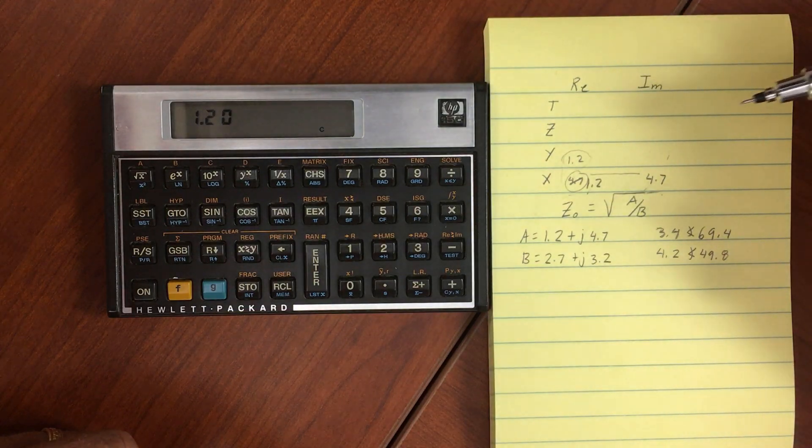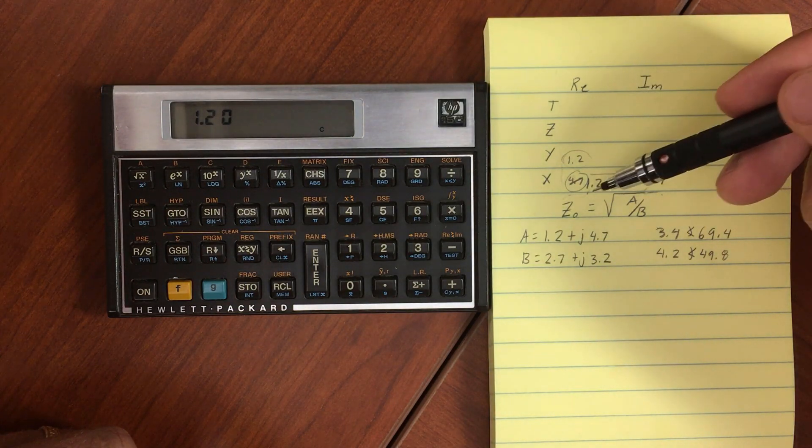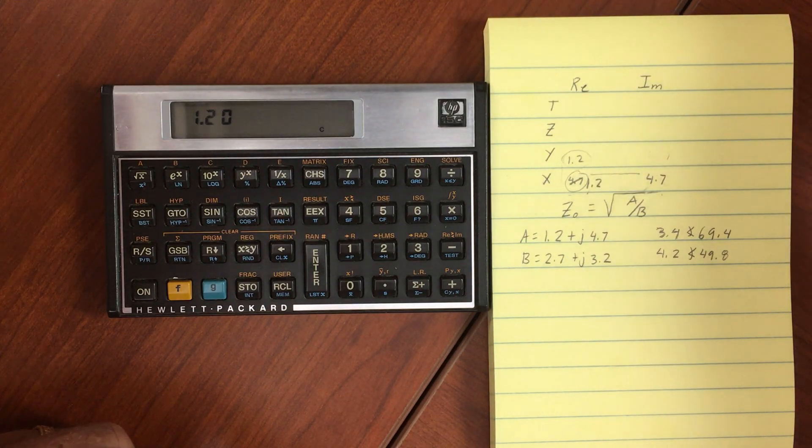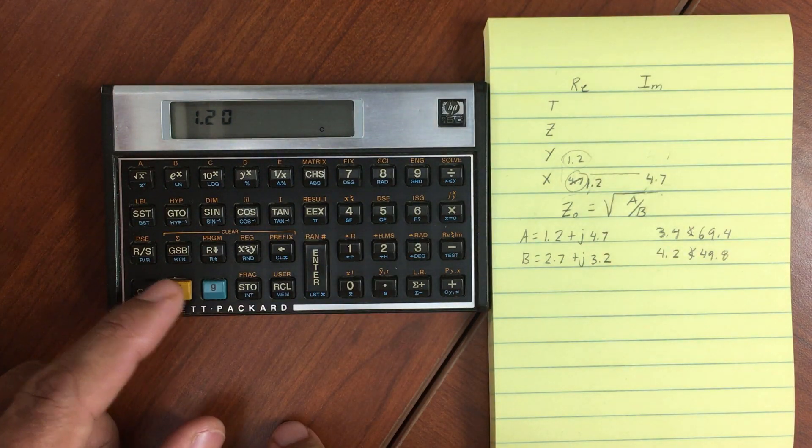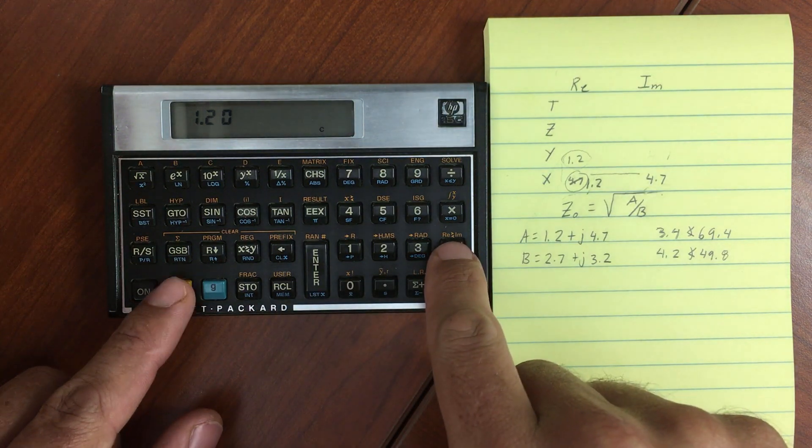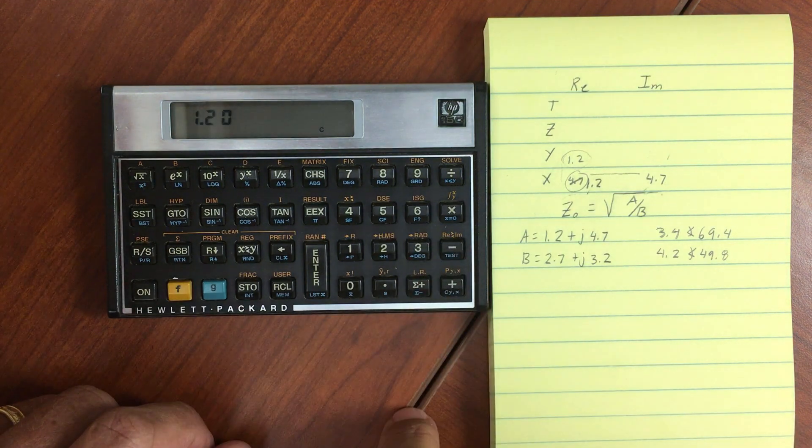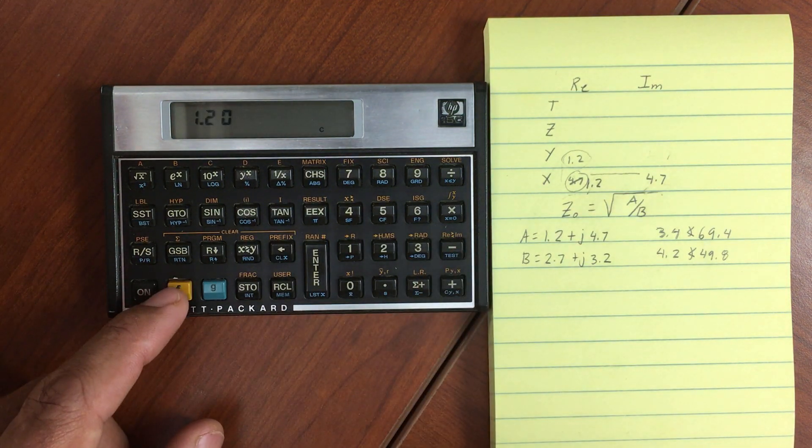So what it does is it creates a separate temporary stack, an imaginary stack, a separate stack, and you have your real stack. To see what's in the imaginary X register, then I would do Shift, and then swap between real and imaginary, and I can see my 4.7 over there.